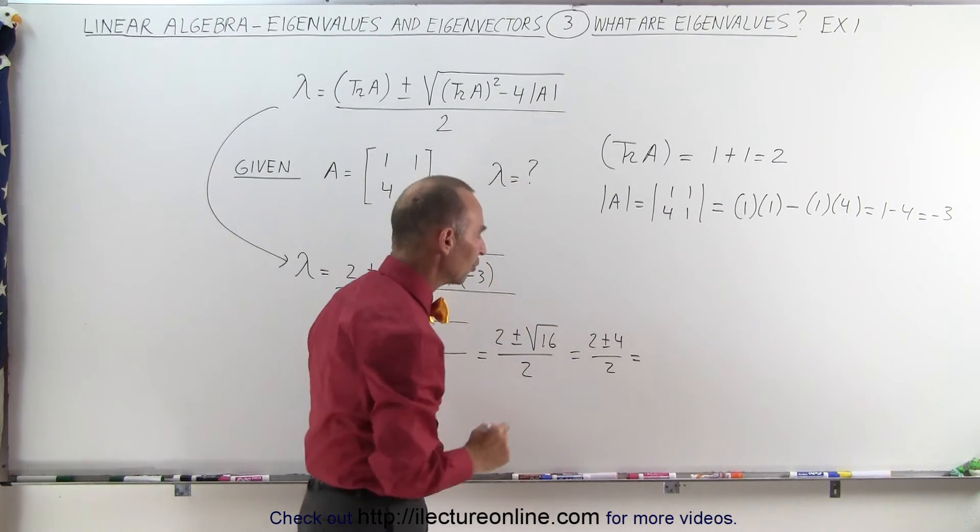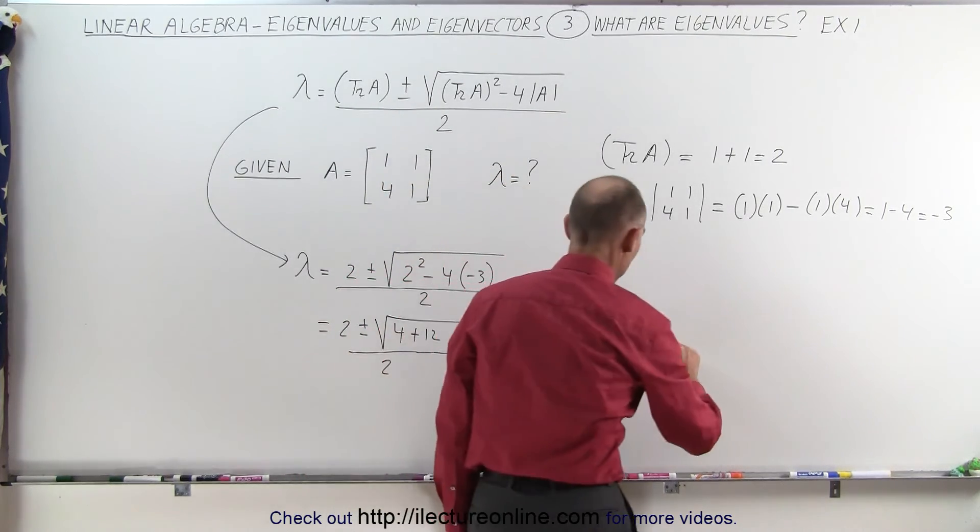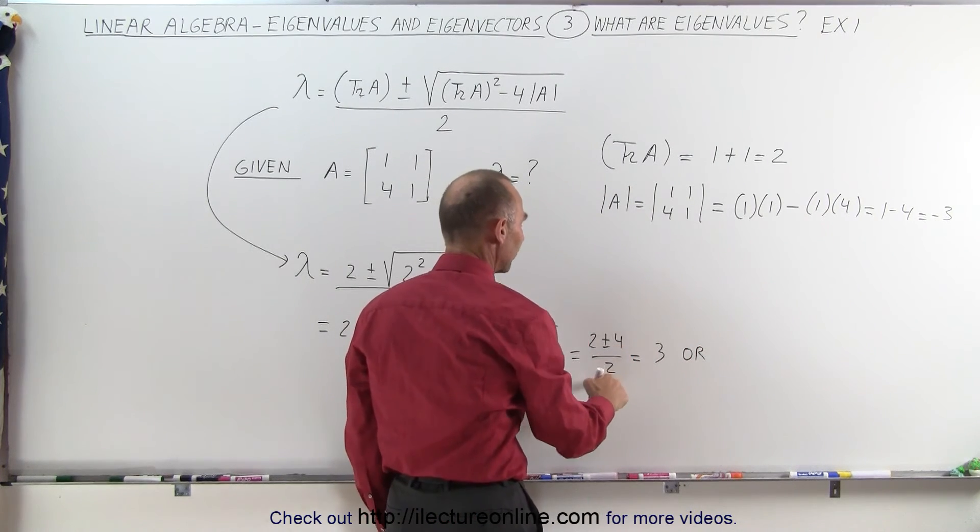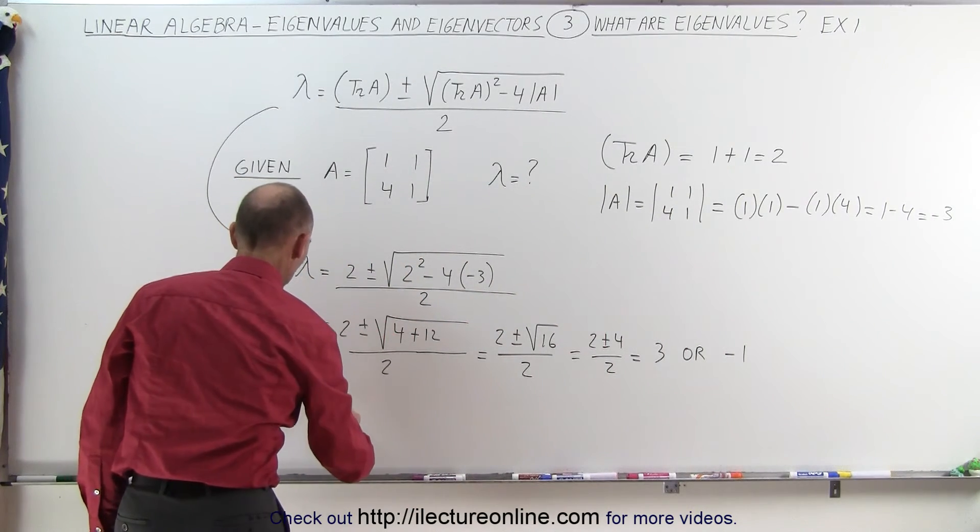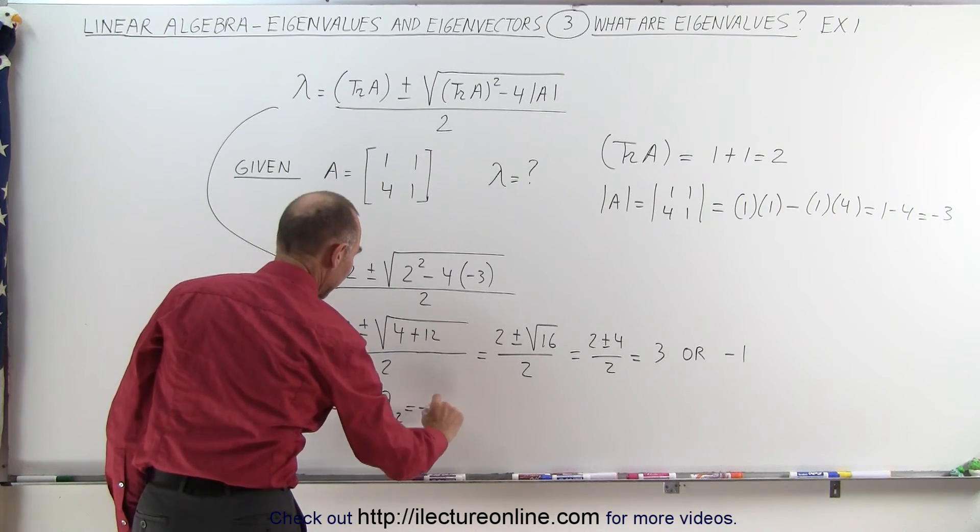That leaves us with two values. 2 plus 4 is 6, divided by 2 is 3. Or 2 minus 4 is -2, divided by 2 is -1. So the two eigenvalues are λ₁ = 3 and λ₂ = -1.